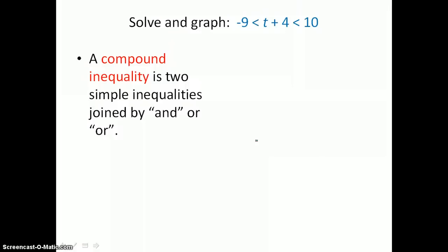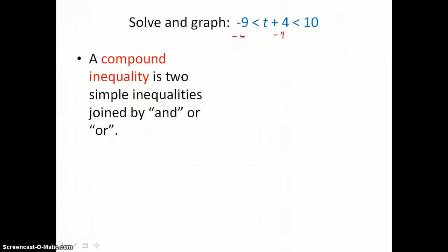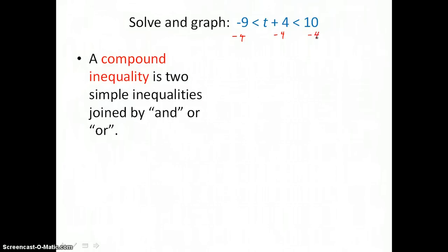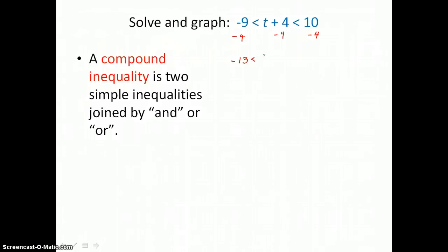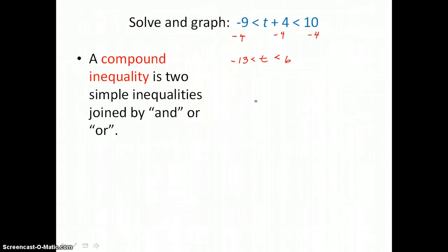In this example, we want to solve and graph a compound inequality. This is an AND statement in shortcut form: negative 9 is less than t plus 4, and t plus 4 is less than 10. To solve an AND statement, we isolate t in the middle by subtracting 4 from all three parts of the compound inequality. Negative 9 minus 4 is negative 13, the center becomes just t, and 10 minus 4 is 6. So values of t are between negative 13 and positive 6.